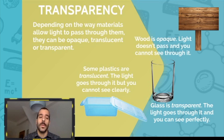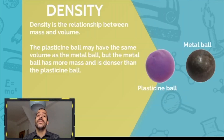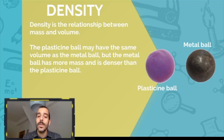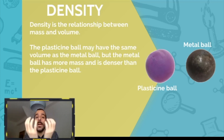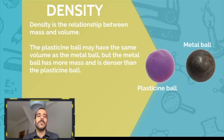Now density. As you know, density is the relationship between mass and volume — mass being how much something weighs, and volume being the amount of space it occupies. Here we have two balls: a plastic ball and a metal ball. They may occupy the same volume, but the metal ball is heavier — it has more mass — so it's denser. The plastic ball is less dense.